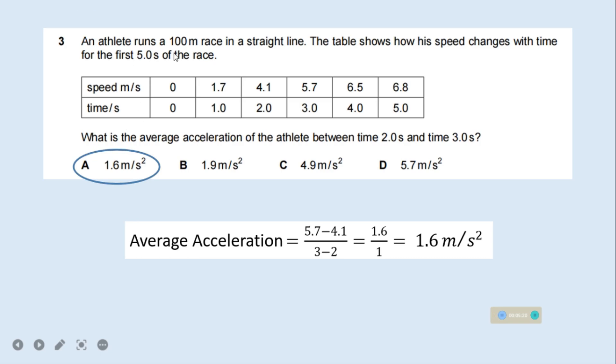Question 3. An athlete runs a 100 meter race in a straight line. The table shows how his speed changes with time for the first 5.0 seconds of the race. What is the average acceleration of the athlete between time 2 seconds and time 3 seconds? Average acceleration is change in speed divided by change in time. Change in speed is 5.7 minus 4.1, which equals 1.6 meter per second squared. Option A is the right one.